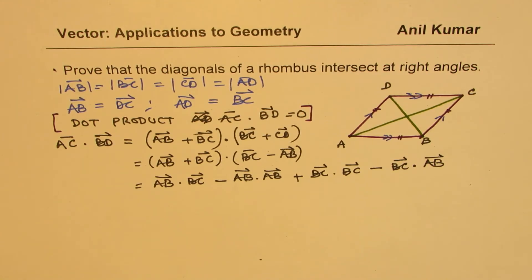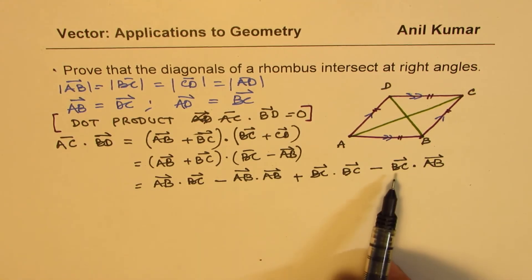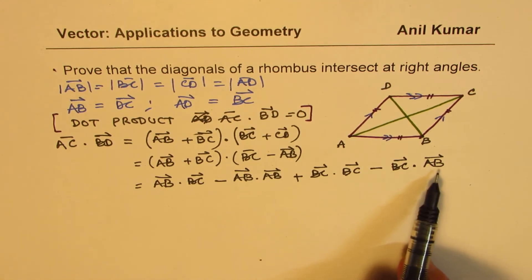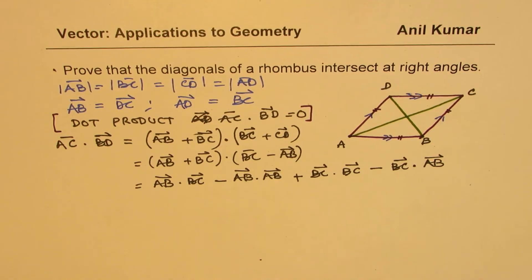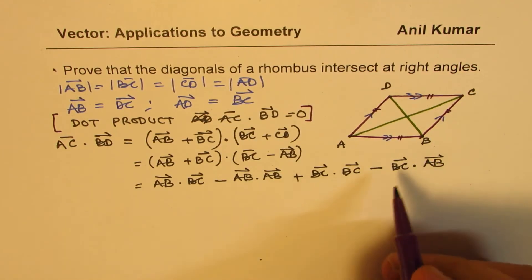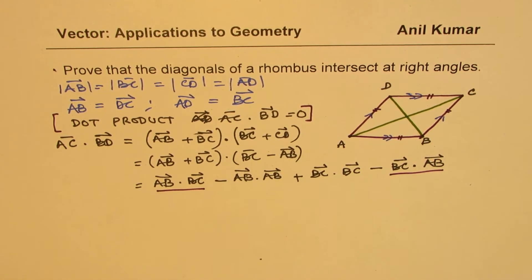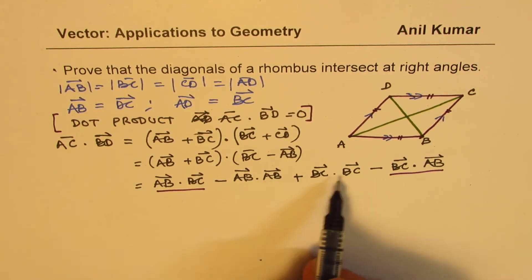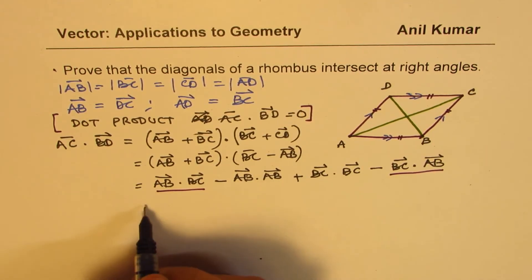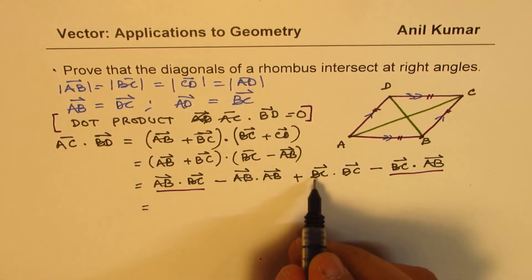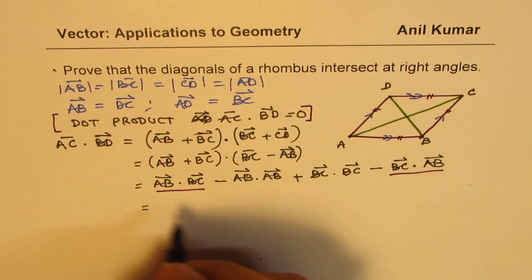Now AB·BC and BC·AB are the same thing, so they cancel out.